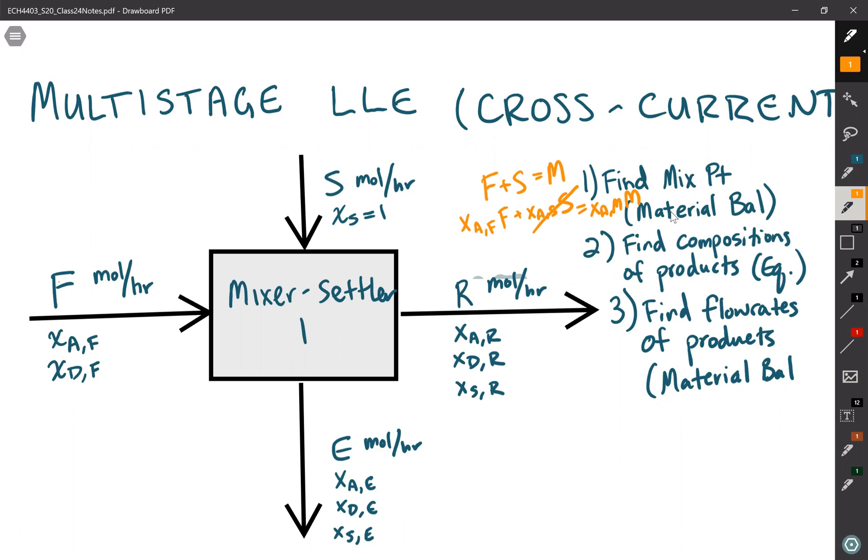Next, when you find the mixing point, you want to plot that on your equilibrium data and then use a tie line only if the mixing point is in the two-phase region to find the compositions of the products. Remember, where the tie line intersects the equilibrium data is the compositions of your raffinate and your extract products. That will give you these three mole fractions and these three mole fractions.